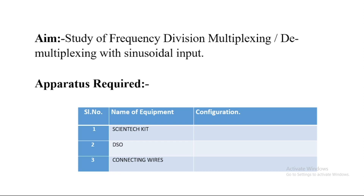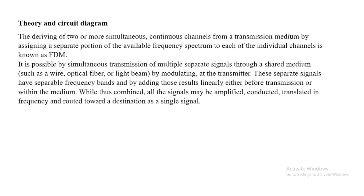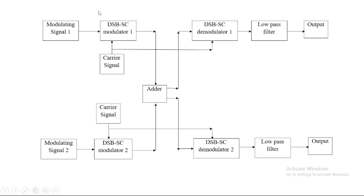We also need connecting wires for the circuit connections. In frequency division multiplexing, two or more signals can be combined and transmitted over a common channel. Different signals are transmitted over a common channel — we multiplex two or more signals and pass them through a common channel. At the receiver, we demultiplex to extract or get the desired signal that was sent from the input side.